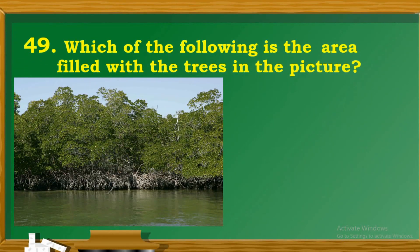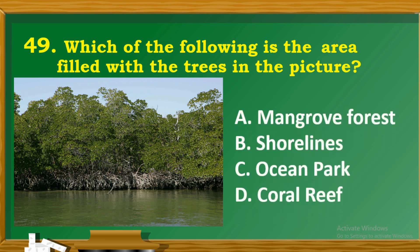Question 49: Which of the following is the area filled with trees in the picture? A. Mangrove forests. B. Shorelines. C. Ocean Park. D. Coral reef.